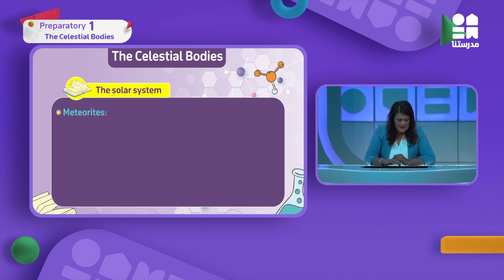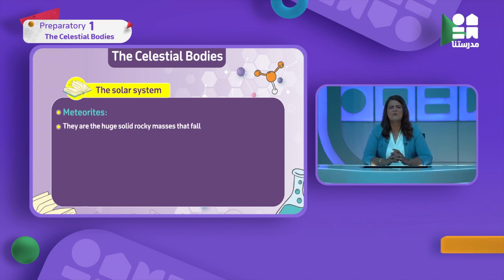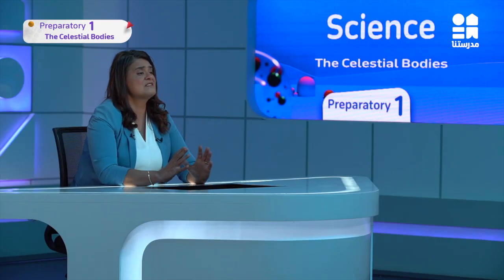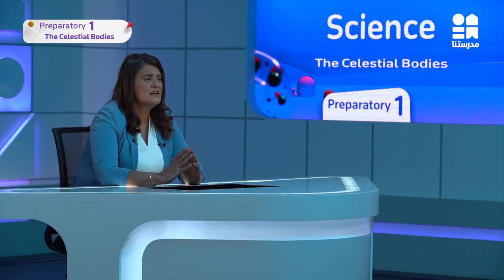Now let's look at meteorites. They resemble meteors but are huge solid rocky bodies. They also fall through the atmosphere and friction occurs, but they don't burn completely - only part of them burns. The remaining rocky part falls to Earth's surface. There is a very famous story of a very huge meteorite...